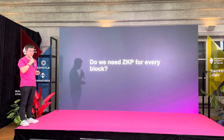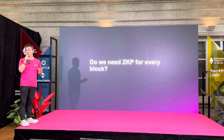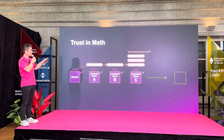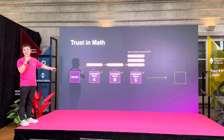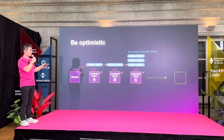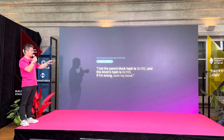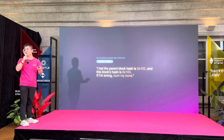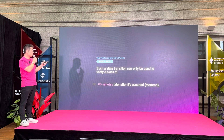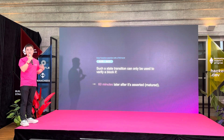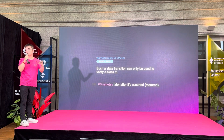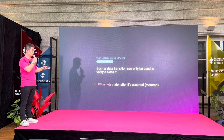So the key question to ask here is: do we really need one ZKP for every block? Probably not. Right now, the current solution requires a ZKP for every block. What if we replace all those ZKPs with an optimistic bond? This bond says: 'I bet the parent block hash is this value and after this block the hash should be this other value. If I'm wrong, burn my bond.' So it's an optimistic strategy. This optimistic transition can be used to verify a block if, for example, 60 to 90 minutes has passed with no challenge — nobody said this is wrong. Then it can be used to verify the block.